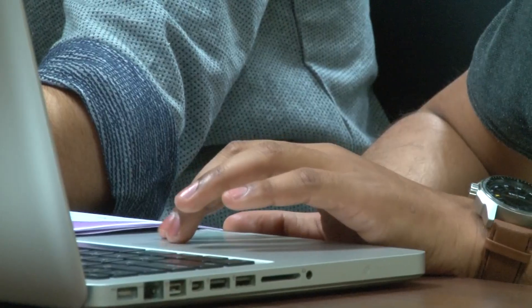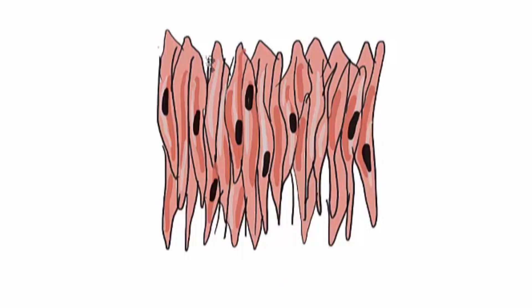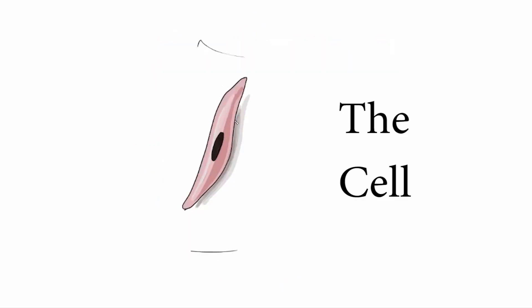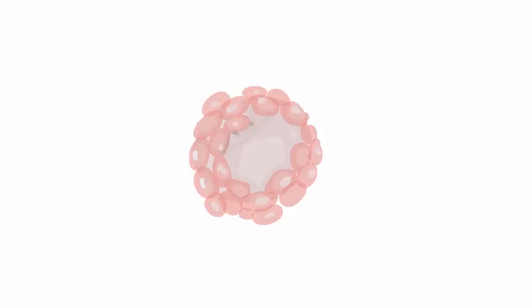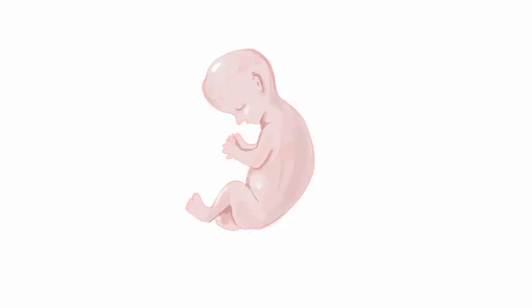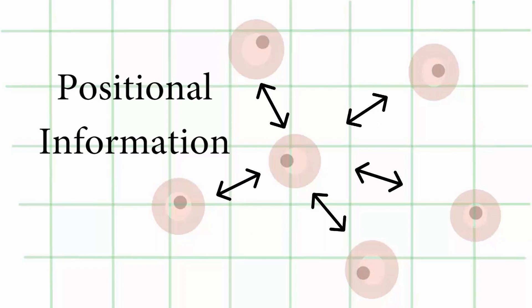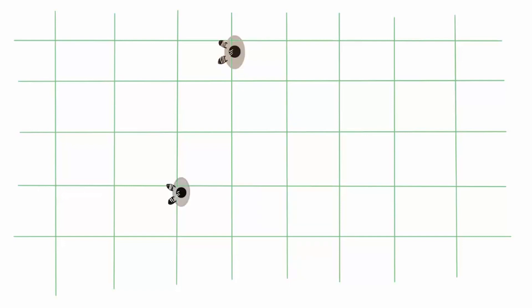Isn't it strange that there are billions of us with distinct appearances but we all have the same body outline? How do different body parts know where to form — basically, how is the human body organized? To answer this, we can look at the most basic unit of life: the cell. A single cell multiplies and differentiates into many cells, which group together to form tissues and then organs. These organs come together to form organ systems, finally forming the human body. The phenomenon behind this is known as positional information.